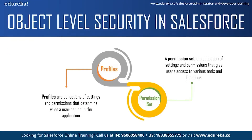Profiles are a collection of settings and permissions that determine what a user can do in the application — what data and features can be accessed. For example, a sales representative will have a sales profile, giving access only to the objects needed for daily tasks. They won't have access to the data or objects a developer uses, and vice versa. In object level security, you assign only those objects the user profile will use. Profile controls which objects a user can see and what they can do — read, edit, or delete.